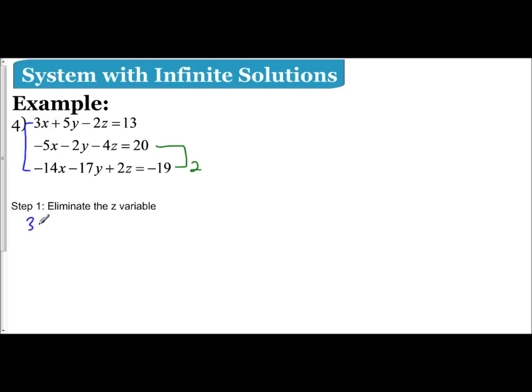If I have 3x plus 5y minus 2z equals 13, and I have negative 14x minus 17y plus 2z equals negative 19. Since my 2z and negative 2z are already opposites, I can add them as is. And by adding as is, they will cancel.